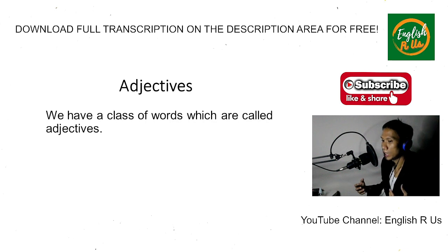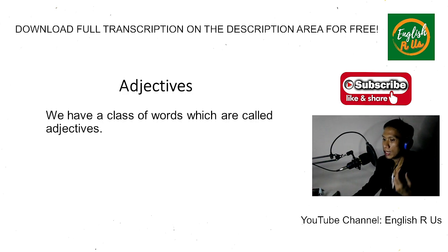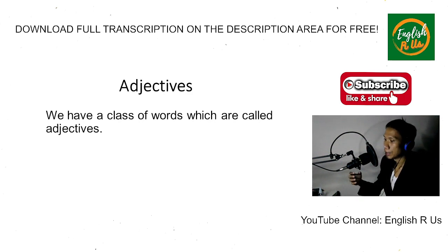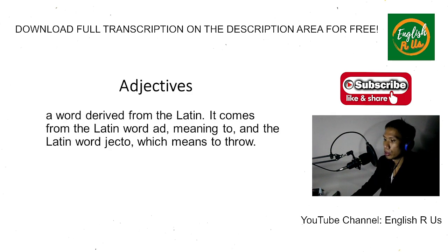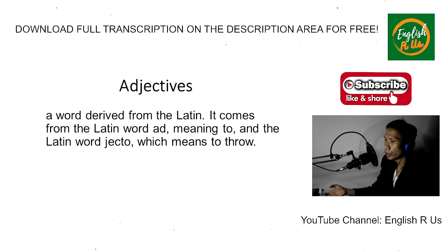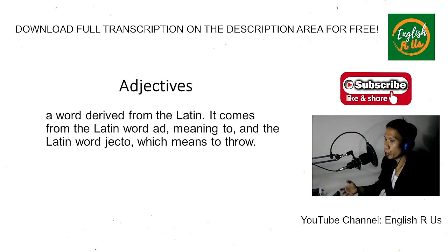We need words by which we can describe these different types and also indicate which men we mean. So we have a class of words which are called adjectives. The word 'adjective' is derived from Latin — 'ad' meaning 'to' and 'jecto' meaning 'to throw' — hence an adjective is a word thrown to or added to a noun.